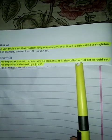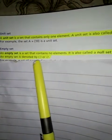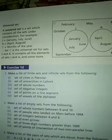Next type: empty set۔ Empty کا مطلب خالی — اس میں کوئی element نہیں ہوتا۔ An empty set is a set that contains no elements۔ اسے null set یا void set بھی کہتے ہیں۔ Empty set کو ظاہر کرنے کے لیے خالی curly brackets {} یا symbol φ (phi) use کرتے ہیں۔